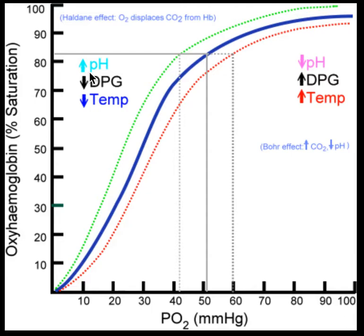The opposite conditions — an increase in pH, a decrease in DPG, or a decrease in temperature — are all indicators of a decrease in metabolic rate. These are areas of your body where the tissues are not particularly active. These indicators will actually cause a left shift in the hemoglobin dissociation curve.